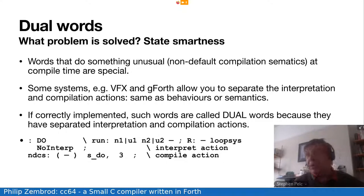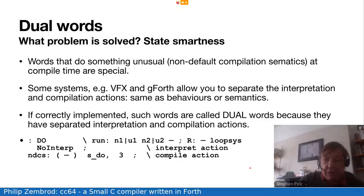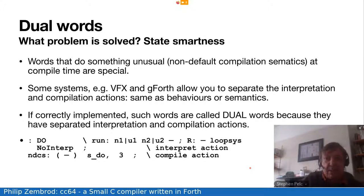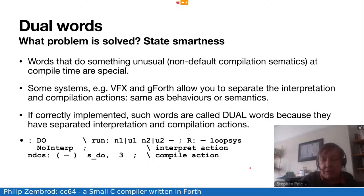The key phrase in the standard, it turns out, is this magic phrase: non-default compilation semantics. What it really means is that the word doesn't do what you expect it to do when you compile it. If you compile 'dupe', you just lay down some code that will eventually perform the operation of dupe. If you meet 'if', it doesn't do a conditional branch — it lays down some code that at some mysterious time in the future will perform a conditional branch.